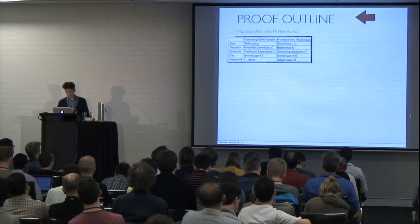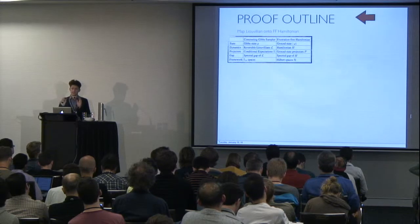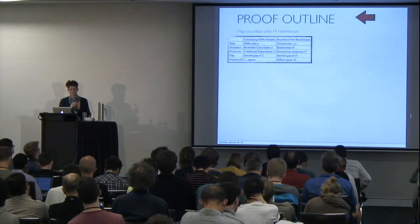So it starts with a mapping between Gibbs samplers and frustration-free Hamiltonians, local frustration-free Hamiltonians. So you can represent the stationary state by doubling the system. You can represent the stationary state, which is a mixed state,